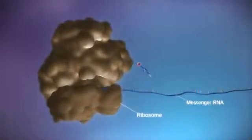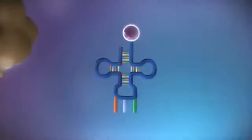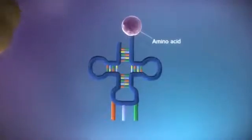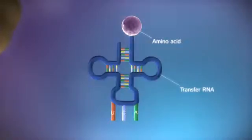The ribosome reads the code in the messenger RNA to produce a chain made up of amino acids. There are 20 different types of amino acid. Transfer RNA molecules carry the amino acids to the ribosome.